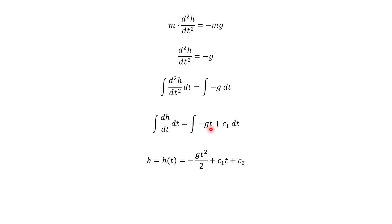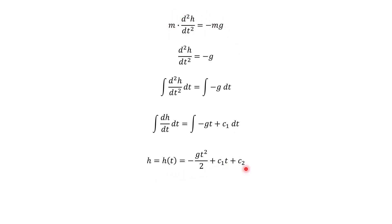We have h of t. Integrating the right side with respect to t using integration rules, we get negative g times t squared over two. Then c1 is a constant, so integrating that gives c1 times t, plus another constant of integration c2. So we started with a differential equation and used integration to find our original function.